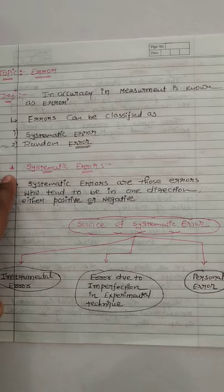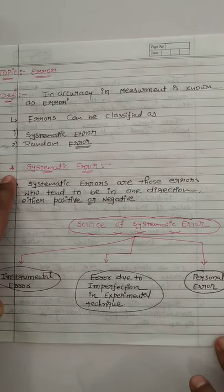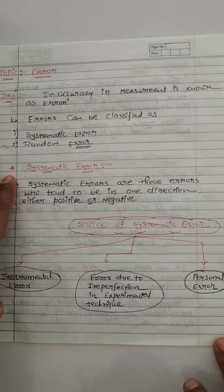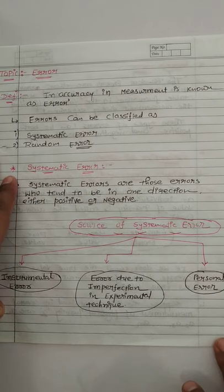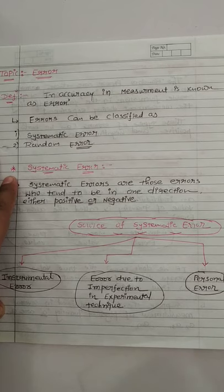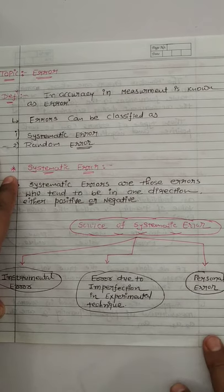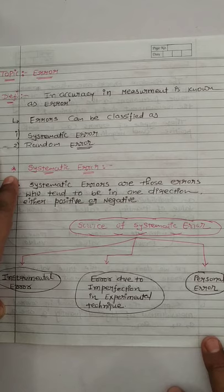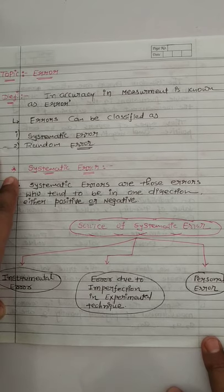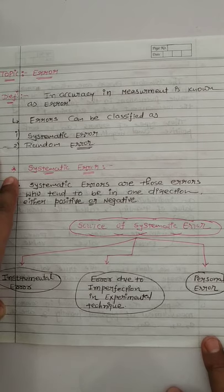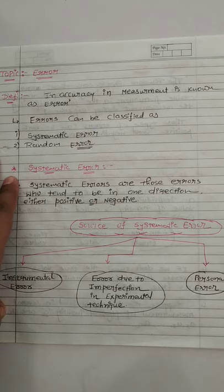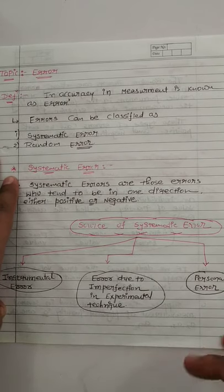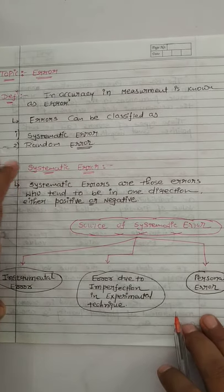Third is personal error. Such an error arises due to an individual's bias, carelessness in taking observations, or improper setting of the apparatus of the experiment. This means that if the person is wrong, sees something differently, or the instrument has not been set properly, then the error is called personal error. These are the three sources that cause systematic error.